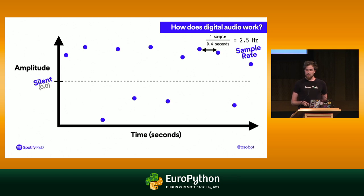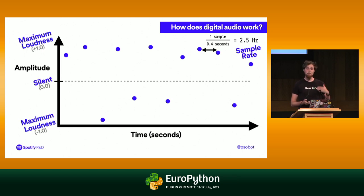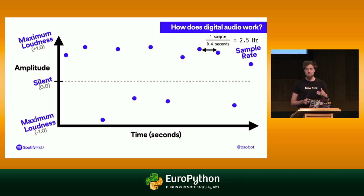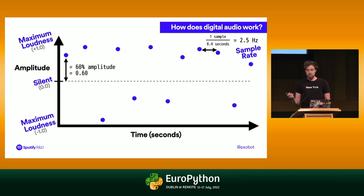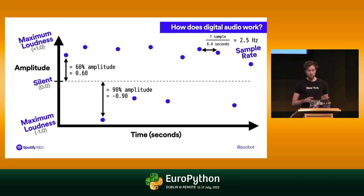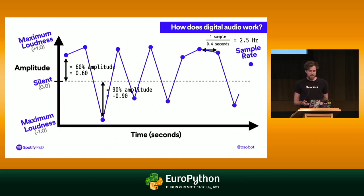Silence is not at the bottom of the graph — it's in the middle. Both the top and bottom represent maximum loudness: positive direction at the top, negative at the bottom, because sound is a wave that vibrates back and forth. We can measure each point: one might be 0.6 amplitude, another negative 0.90. Unfortunately, at 2.5 Hz we don't have enough detail to reconstruct the sound. So let's re-record at a much higher sample rate.